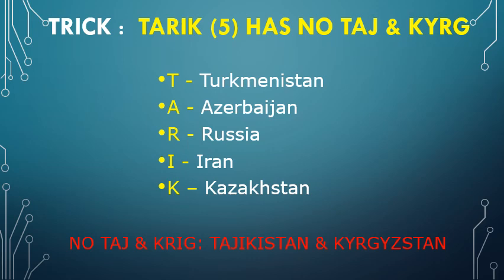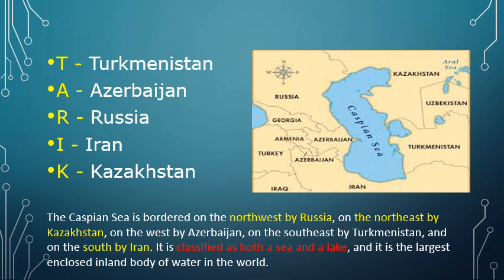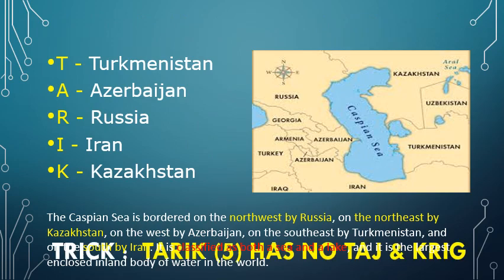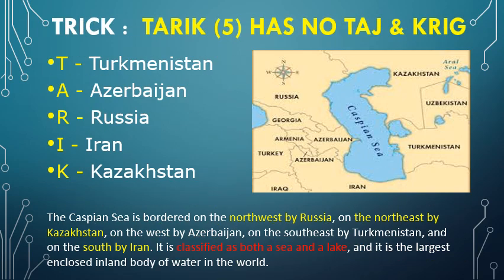Only these 5 countries are touching the Caspian Sea: Turkmenistan, Azerbaijan, Russia, Iran, and Kazakhstan. The trick is very simple — Tariq has no Taj and Creek.